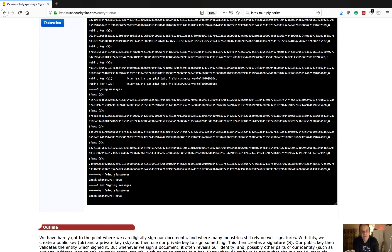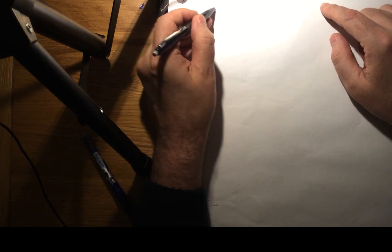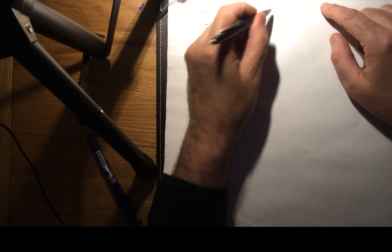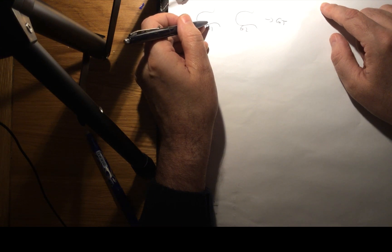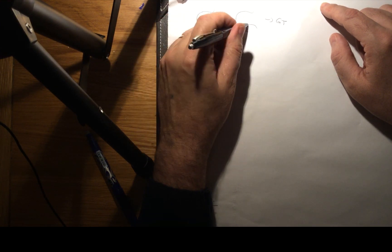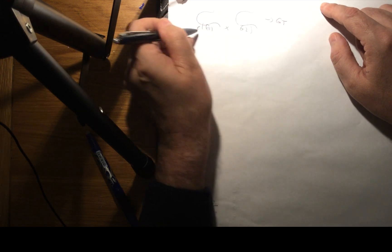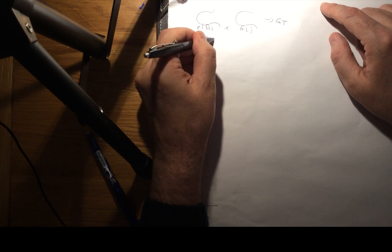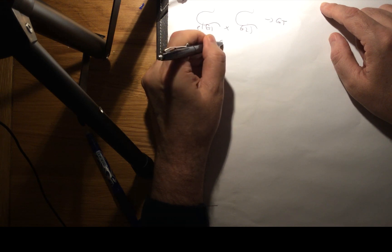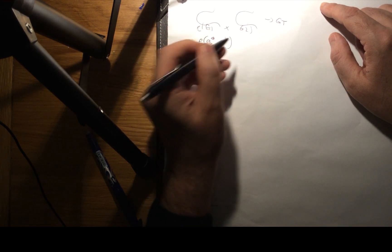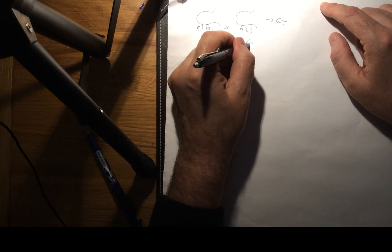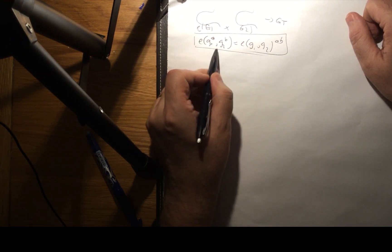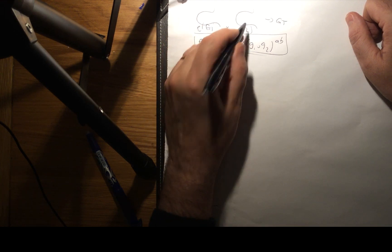In this case our signatures are verified. So what we have is two elliptic curves, g1 and g2, and then they produce gt. When we multiply these together with a function e, we end up being able to take a point to the power of a and another point, and that becomes equal to g to the power of a times b. This is the bilinear mapping we get using these crypto pairings.